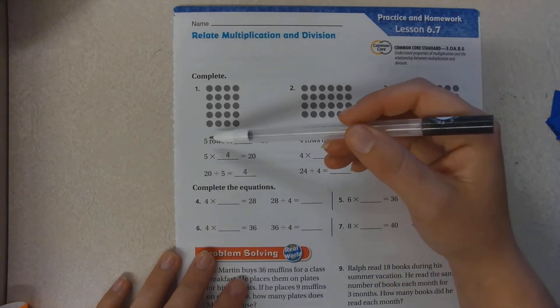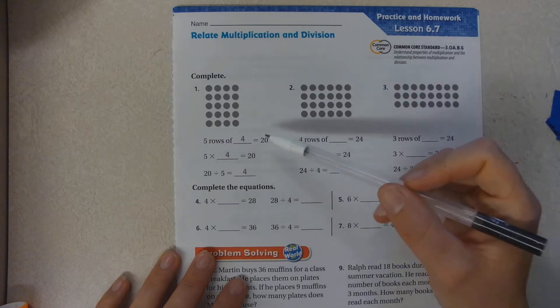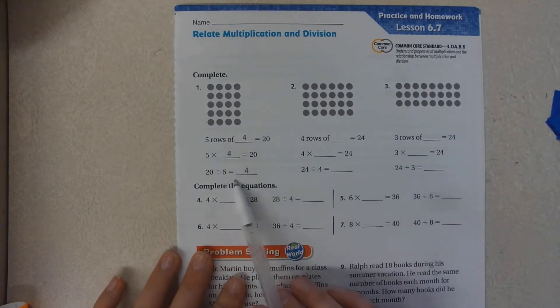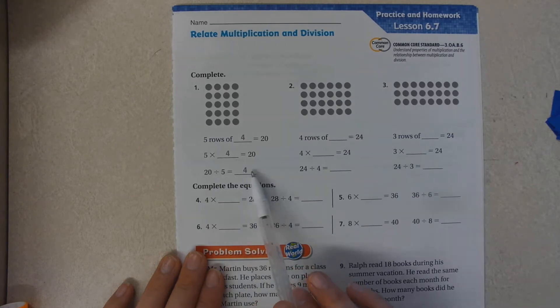So we have 5 rows of 4 which equals a total of 20. So 5 times 4 equals 20. You can do the reverse of that and do 20 divided by 5 equals 4, because you take your total and you divide it by 5 to get 4.